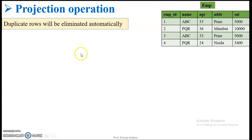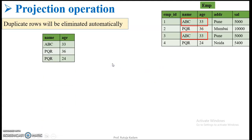Why do we say it eliminates duplicates? Here is the table we are considering — I want to display just the name and age of the employees. If you observe, there are records having the same name and age, meaning there is a replication of a record. When performing a projection operation, it will eliminate the duplicate record and display only one record on behalf of the two. So in the full table there are four records, but projection will display only three.